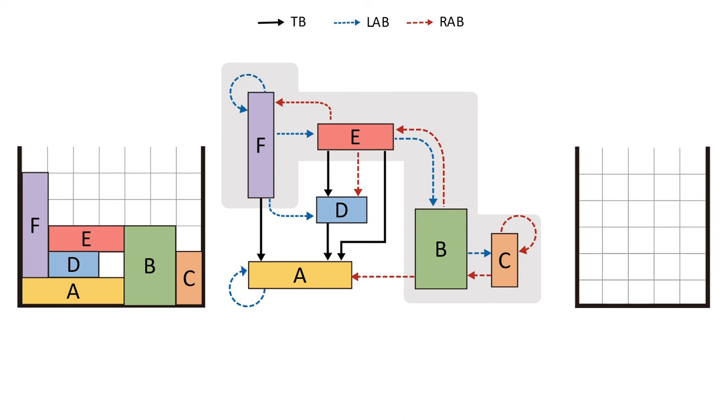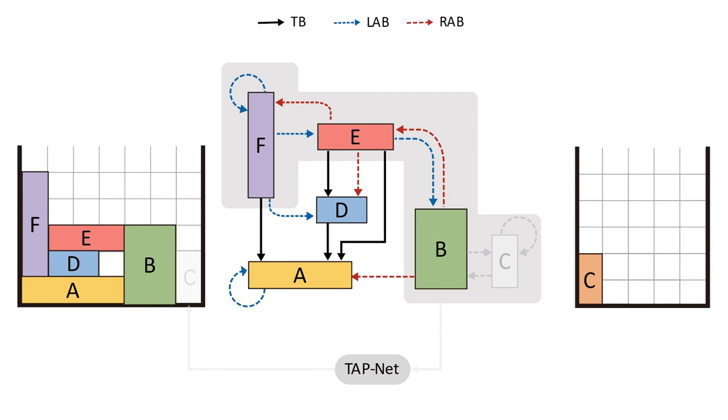Objects F, E, B, C. Once C is selected by TAP-Net for packing and removed from the initial configuration, D is passed to the network for the next object selection, and the process iterates until all objects are packed.